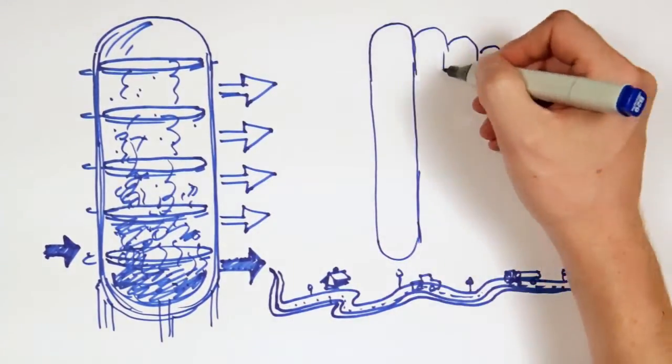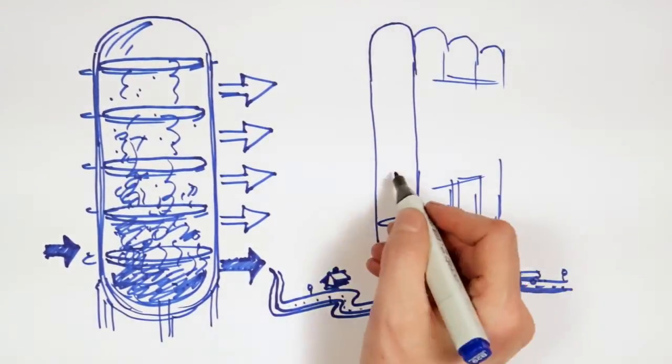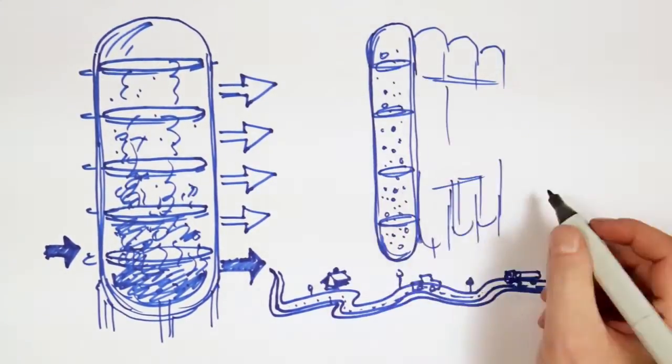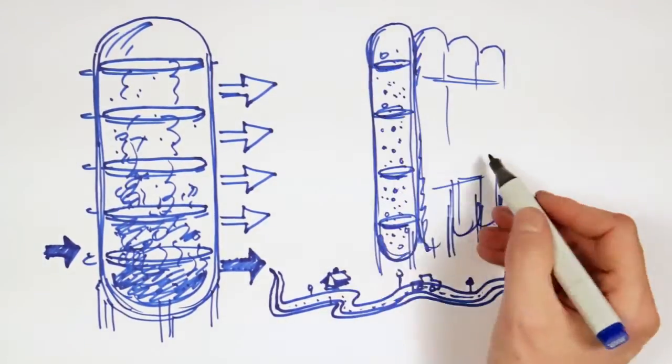At our refinery, those parts with a lower boiling point, which are now called distillates, are taken to a hydro-treatment plant. This is where we remove impurities such as sulphur and nitrogen.